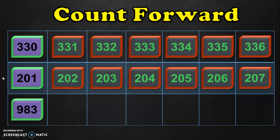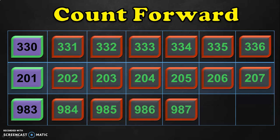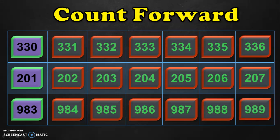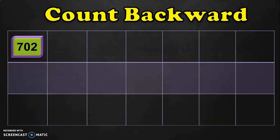Let us do one more example. Write the numbers that come after 983 by counting in forward. So after 983 it is 984, 985, 986, 987, 988, 989. Now let us move on to the next number activity: counting in backward.